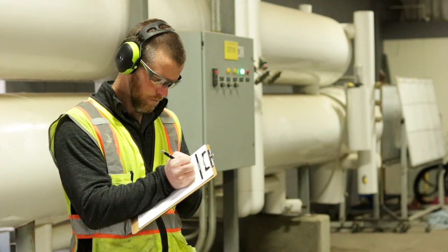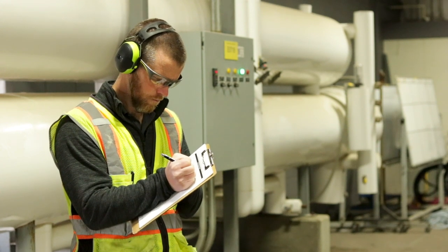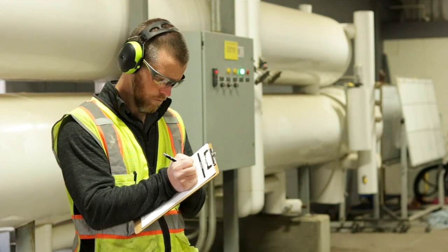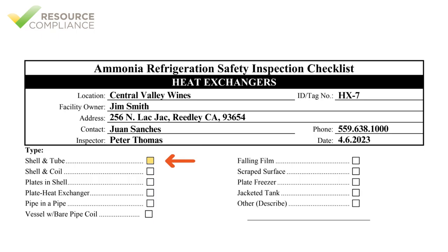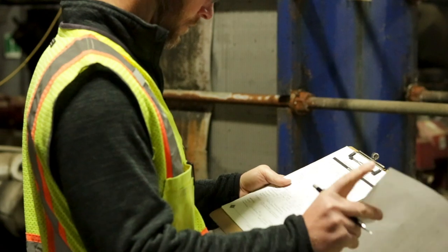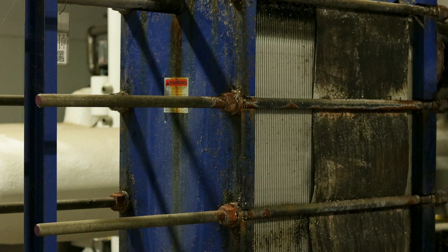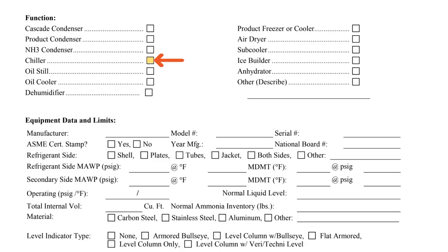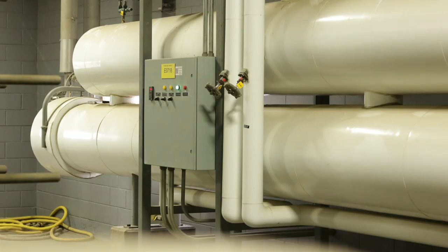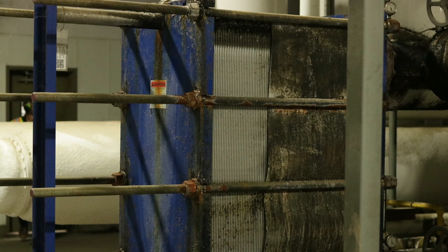Next, the inspector should indicate the type of heat exchanger being inspected. This is a shell and tube heat exchanger, so in this example the uppermost box would be checked. In another example, a plate and frame heat exchanger was being inspected, so the corresponding box would be checked. In this section titled Function, we will check the box for chiller, since the purpose of this heat exchanger is to reduce the temperature of a glycol solution.